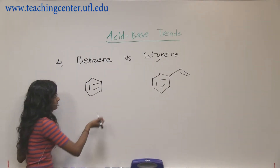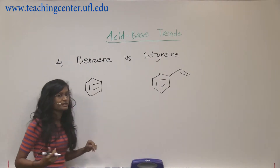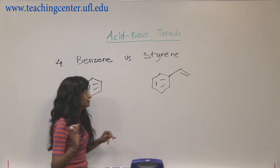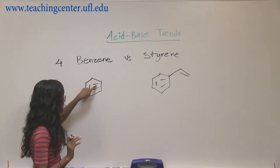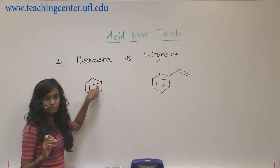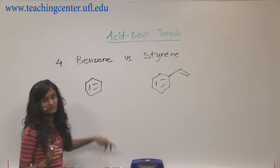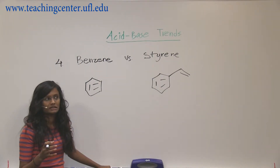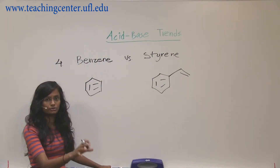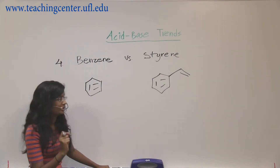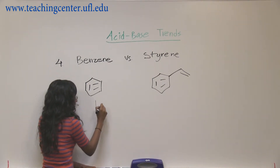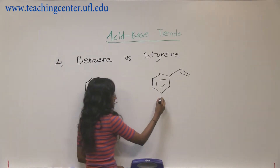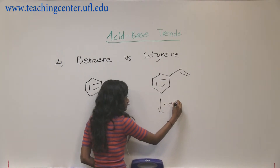Now we all know that we don't mess with benzene until the end of Organic 2. We don't want to break the pi bond inside benzene because the structure is aromatic, and it's much harder to go ahead and grab it. But we're still going to try to mimic it and see if we can answer the question.